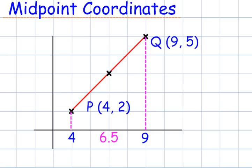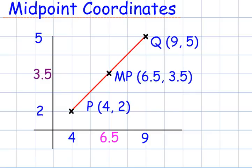Now, look at the y-coordinates. We have 2 and 5. If I add them together, I get 7. I divide that by 2, is 3.5. And so, the midpoint of PQ is 6.5, 3.5.